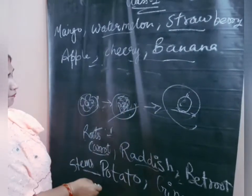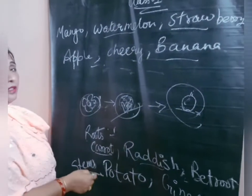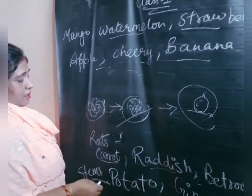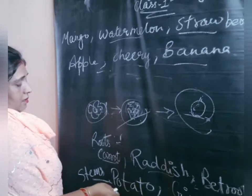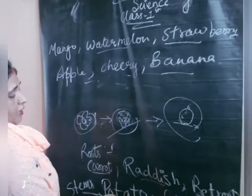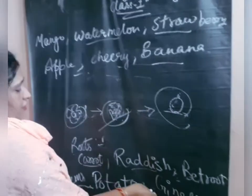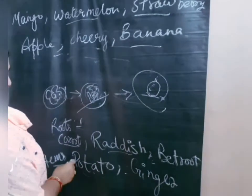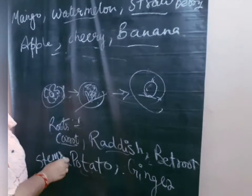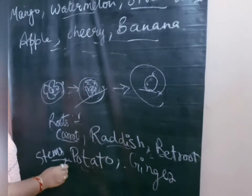Stems. We eat the stems of some plants. Potato and ginger are the stems of a plant.